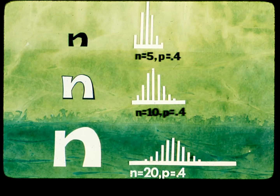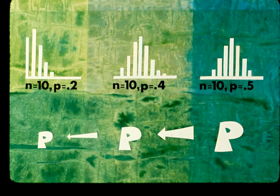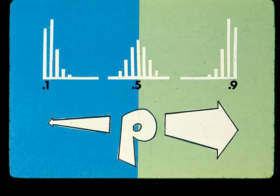But how does the other parameter P control the distribution? Looking at three binomial distributions, this is what happens when P gets smaller given that N stays the same. As P gets further away from 0.5, the shape of the distribution leans more to the left — it becomes more skewed or asymmetric. This is true in both directions from 0.5; for values of P larger than 0.5, the lean is in the opposite direction.